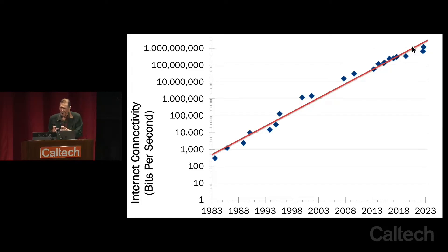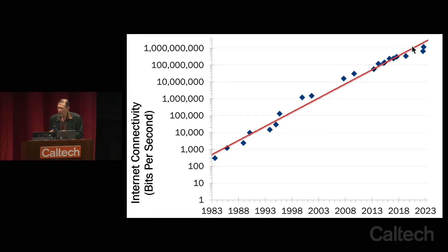You can process information and ship it from one place to another, but you also want to be able to use that information to do work — to turn on lights and run motors, that kind of real work in the real world. And that takes more than information; it takes energy, it takes power to run the motor or run the light.